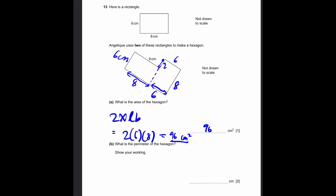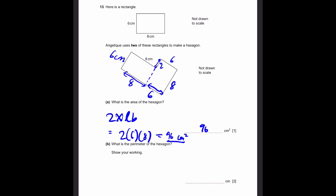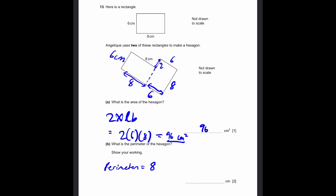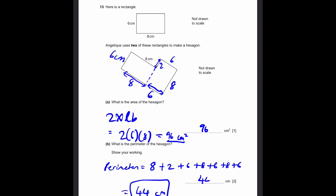So the perimeter of the hexagon is going to be adding up all the values: starting from 8, then 2, plus 6, plus another 8, plus 6, plus another 8, plus another 6. When we add these up — 8, 10, 16, 24, 30, 38, 44 — we get 44 centimeters. That's our answer. Thank you.